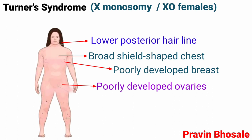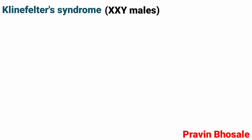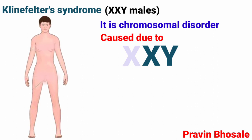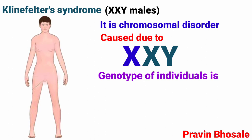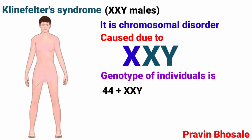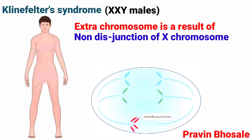Klinefelter syndrome affects XXY males. It is a chromosomal disorder caused due to an extra X chromosome in males, giving a genotype of 44 autosomes plus XXY. These individuals are described as feminized males, with the extra chromosome resulting from non-disjunction of the X chromosome during meiosis.